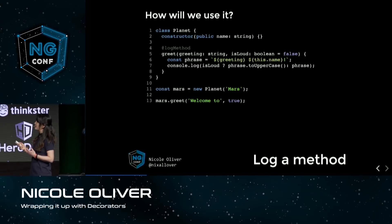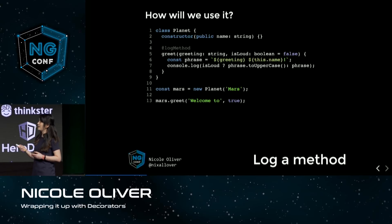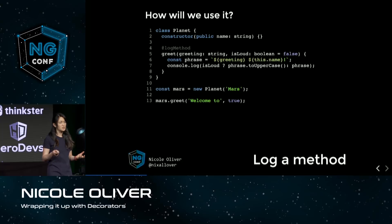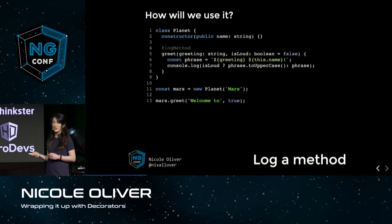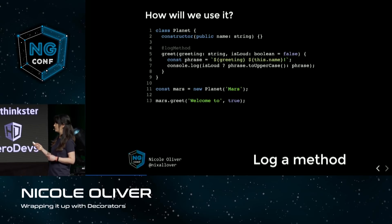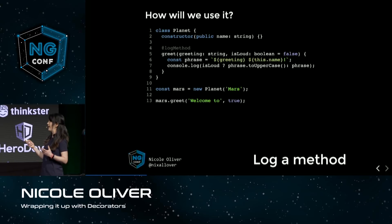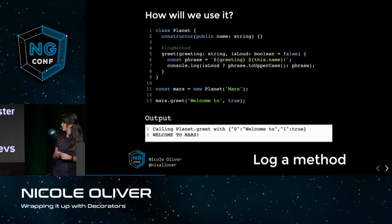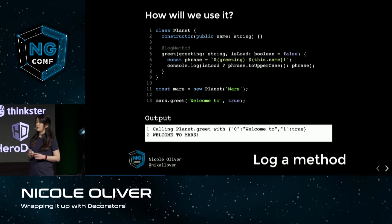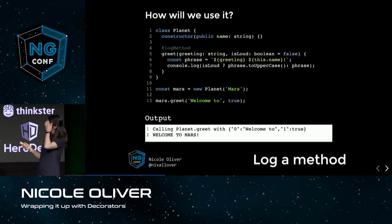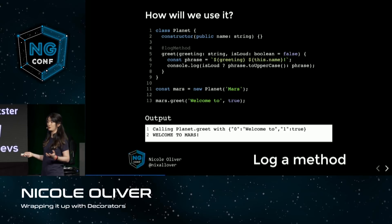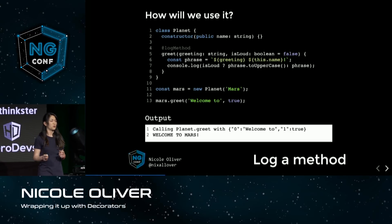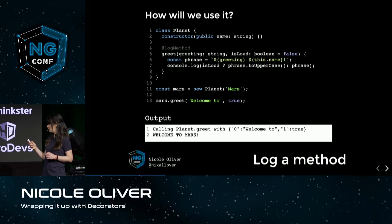As an example, I have a planet class with a method called greet. My greet method takes a couple of arguments and console logs out a greeting. I'll instantiate my planet class, then call mars.greet with arguments — a greeting like 'welcome to' and a loud flag set to true. The expected output: first, our decorator announces 'calling planet.greet' with the argument map, and then the method runs and outputs 'welcome to Mars.'